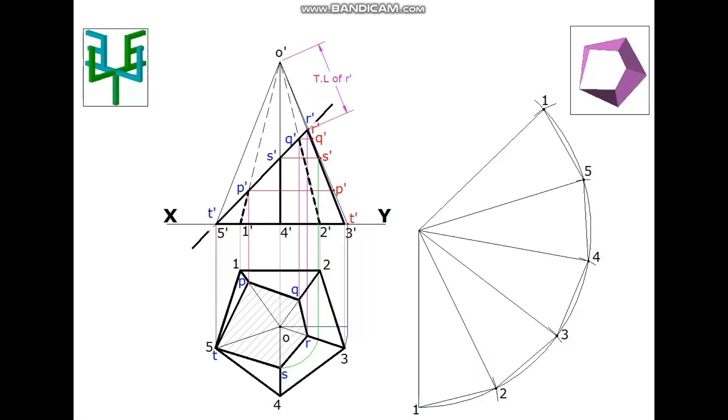Measure the true length of R', mark it on the slant edge 3 of the development part and name it as R.